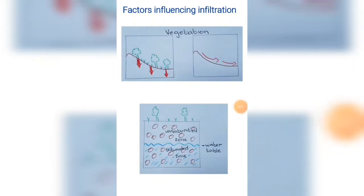The fourth factor influencing infiltration is vegetation, and this is a very important factor. The more vegetation there is, the more infiltration will occur. This is because as the water is running over the surface of the ground, the roots of the vegetation trap the water and force infiltration to occur.